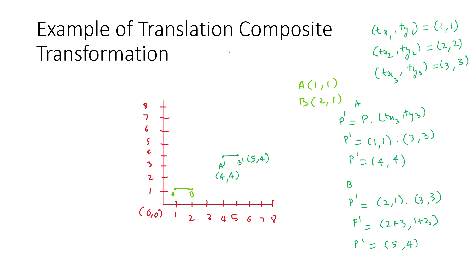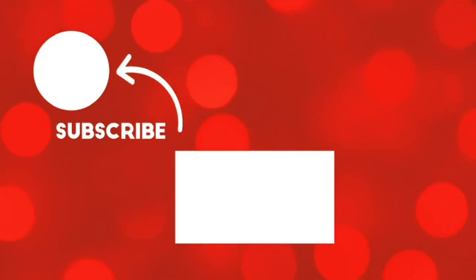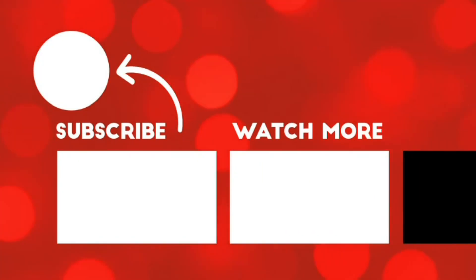This is how we perform composite translation transformation. Instead of performing each translation separately, you combine them together and apply it once using the translation composite transformation. I hope you got this concept. If you have any queries or suggestions, feel free to ask or write them in the comment section below. If you like the video, please share it with your friends and subscribe to my channel. Thank you very much for watching.